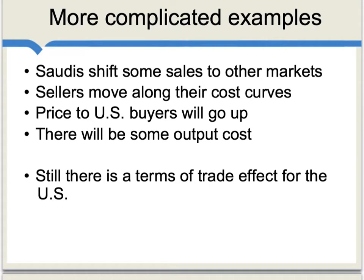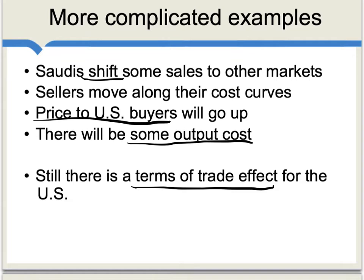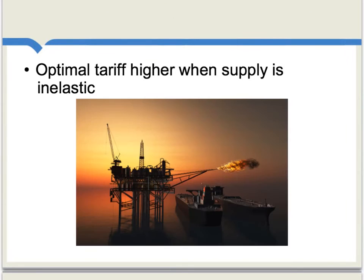In more complicated examples, we may find that the Saudis shift some of their sales to other markets, perhaps with lower taxes. It may be the case that the price to U.S. buyers will go up, and there may also be some output cost in the sense that the Saudis end up selling less oil to the United States. Still, if the United States can use the tariff to get a terms of trade effect, it can redistribute income away from the Saudis and toward the United States. In general, the optimal tariff for the importing country is higher when supply is inelastic, because then you can impose the tariff and there are fewer other places the oil might go.